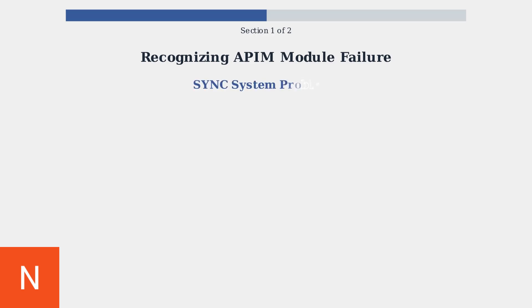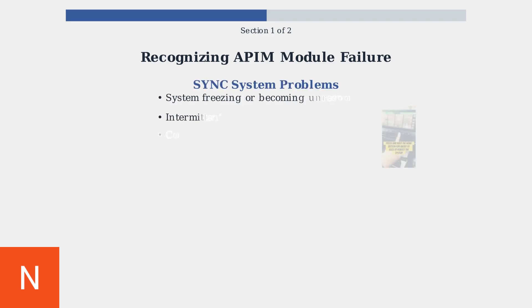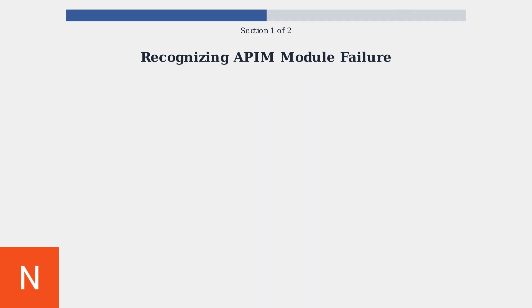The most obvious signs of APIM failure involve the Sync system itself. You may experience complete system freezing, intermittent black screens, continuous reboot loops, or extremely slow response times when touching the screen.